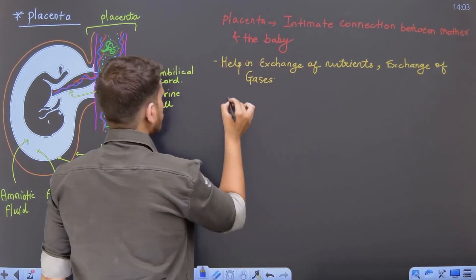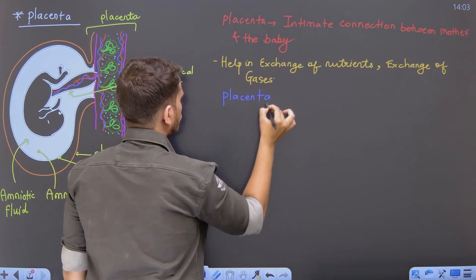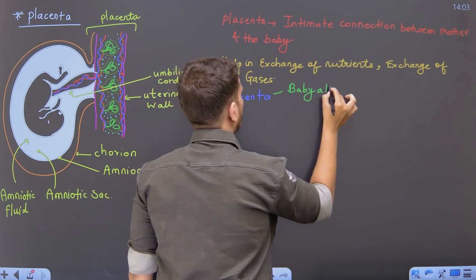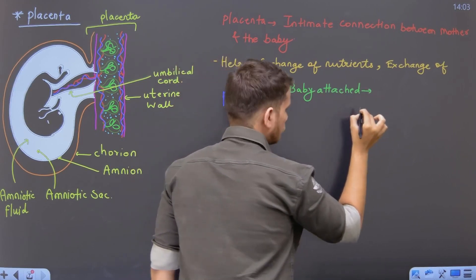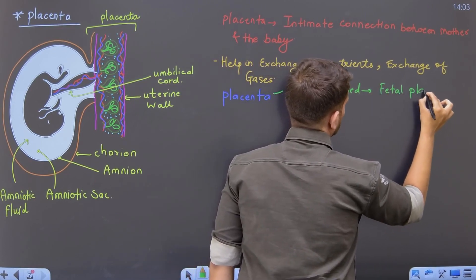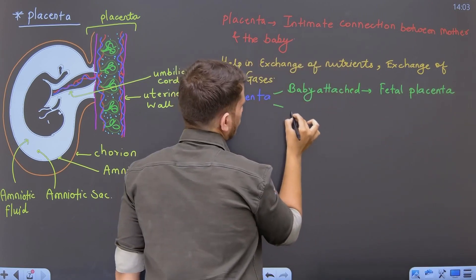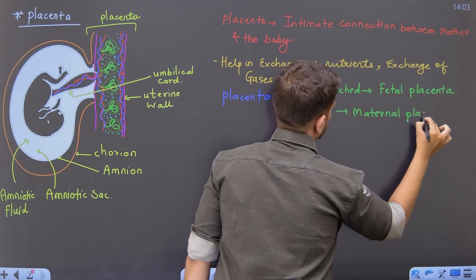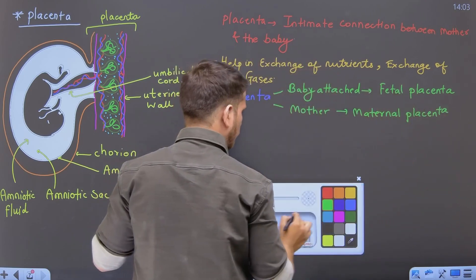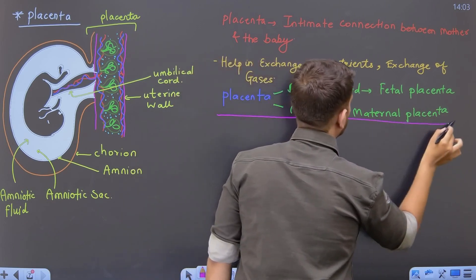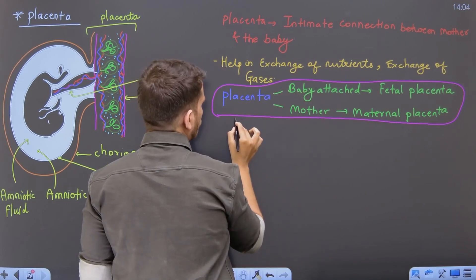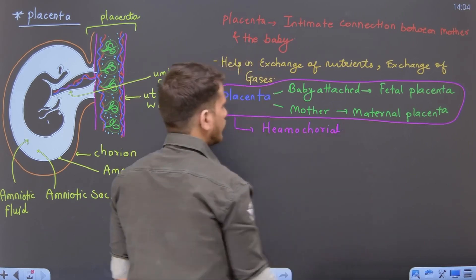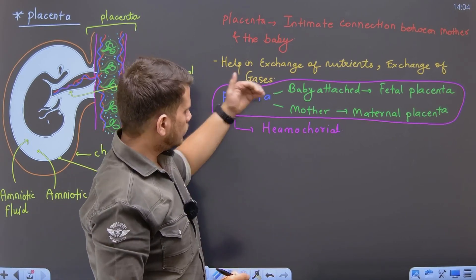Jab aap isko samjhenge, placenta do hissoon se bana hai. Sabse pehla jo part baby ko attached hai, this is called as the fetal placenta. Dusra, jo mammi ko attached hai, which is attached to mother, it is called as the maternal placenta. So because ek hi organ do alag-alag individuals se derived hai, human placenta is what is called as hemochorial, because it is derived from mother and the baby.